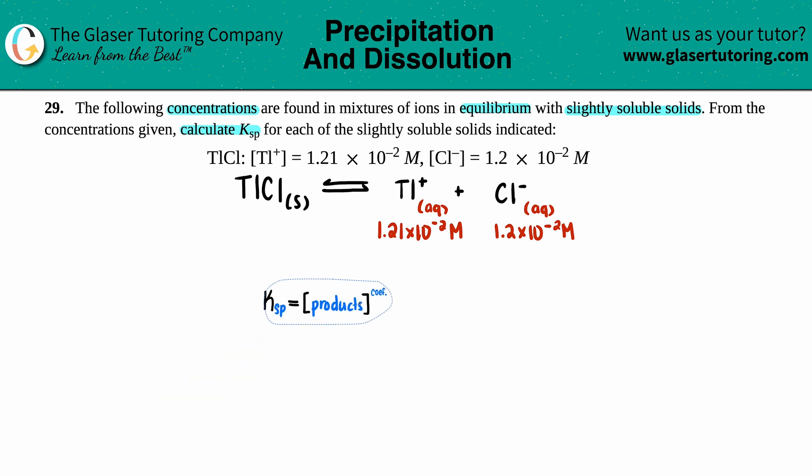Now let's use that balanced equation to get the Ksp equation, right, the specific one for our case. Ksp always equals just the products raised to the coefficients. So the Ksp would be equal to the concentration of Tl+ times the concentration of Cl-. Now they're both raised to the first power because there's only one of each, so you can raise both of them to the first, but that would be the same as just not writing it in there.